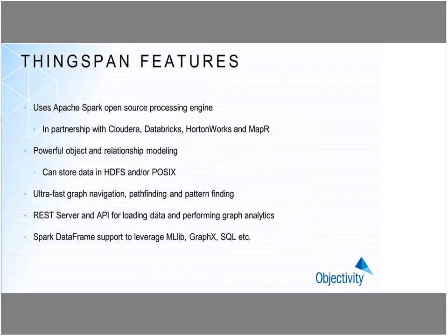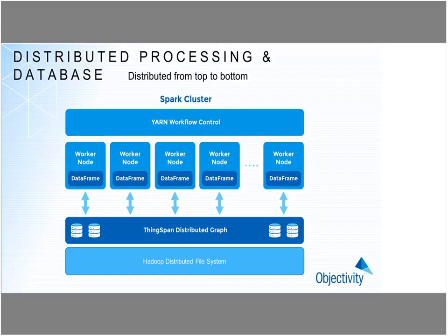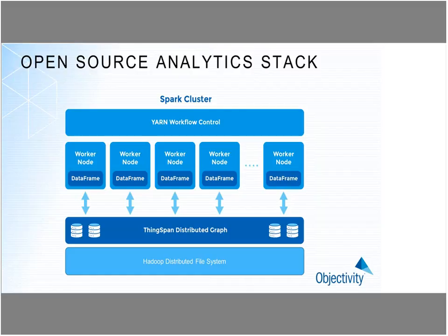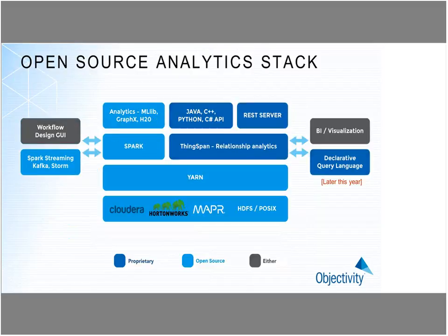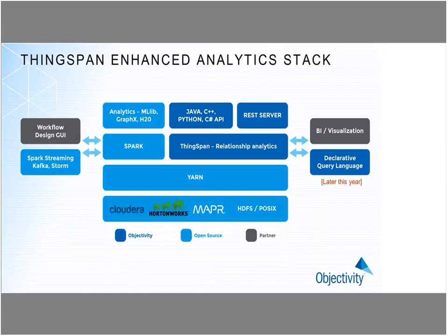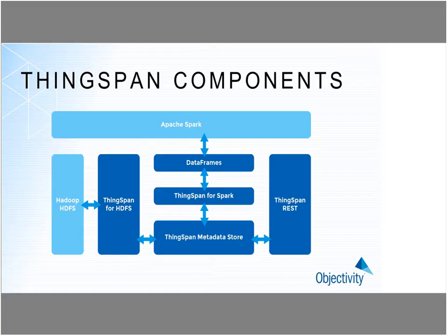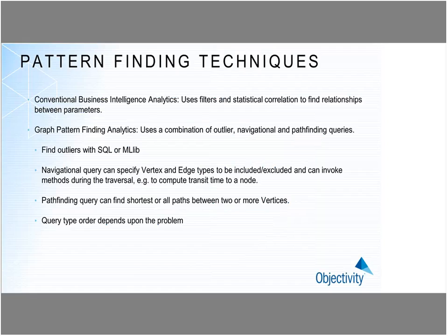You can store the data either in HDFS or in POSIX — it just depends on your environment. It's distributed from top to bottom, which is kind of unique. Spark, of course, is distributed; the worker nodes are our clients. We have a distributed database which fits neatly into the HDFS distributed file system, so it's very good at load balancing — you can scale out and scale up. We provide a REST server and APIs so that you can perform various kinds of computation and analytics. Let's get right into pattern finding, which is the core of what this session is about.